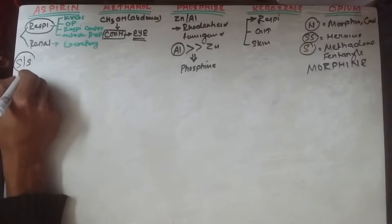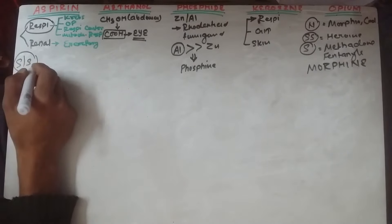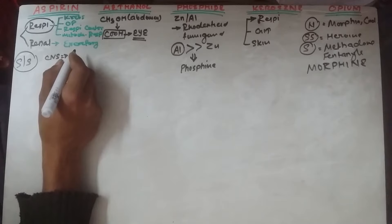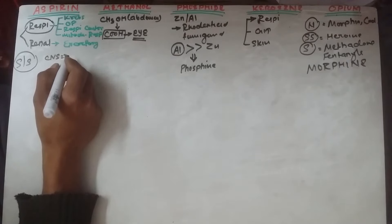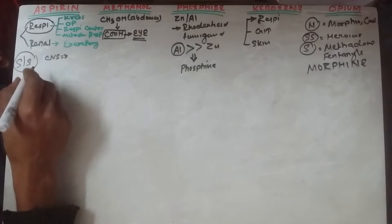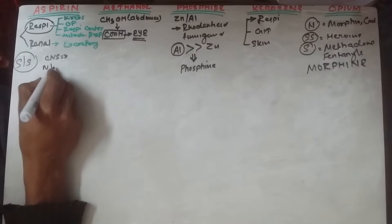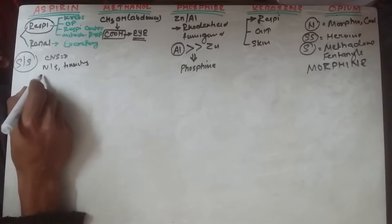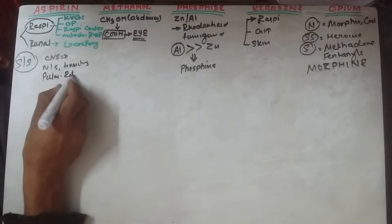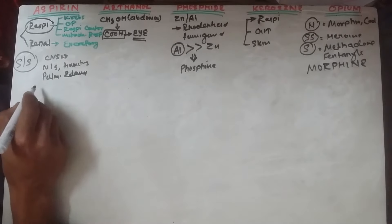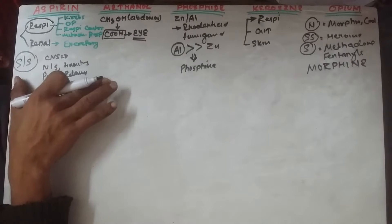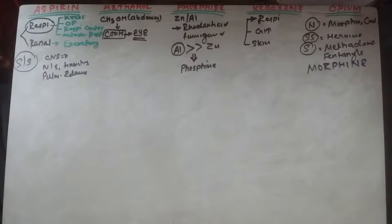CNS manifestations include hyperactivity, irritability, delirium, agitation, vertigo, slurred speech, hallucinations, and stupor. Other important signs and symptoms include nausea, vomiting, tinnitus, and pulmonary edema.